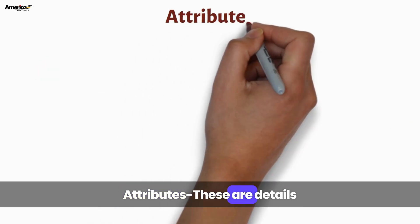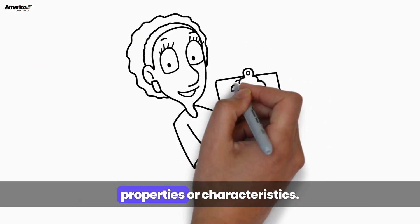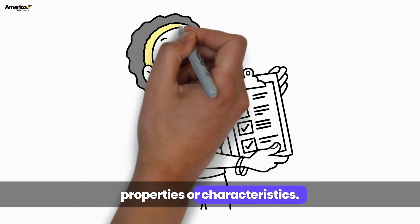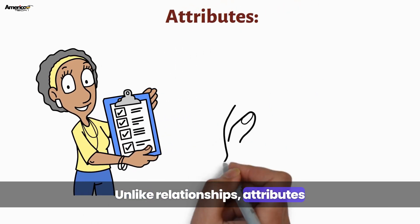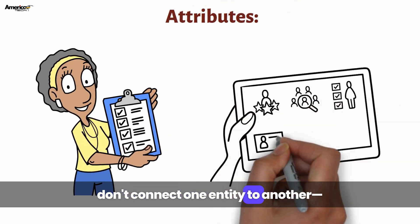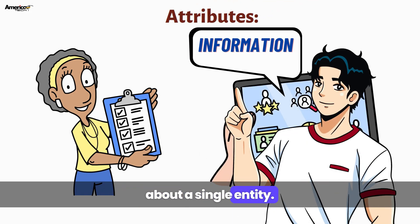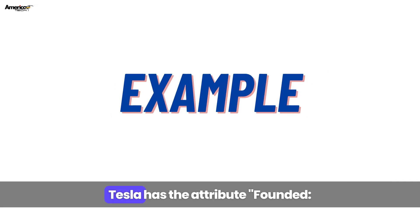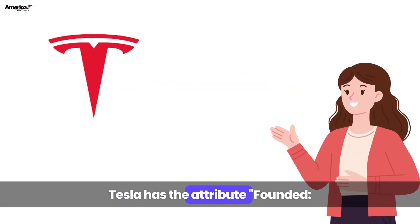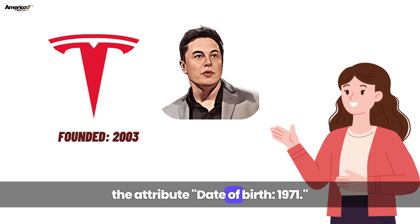Attributes — these are details that describe an entity's properties or characteristics. Unlike relationships, attributes don't connect one entity to another; they give extra information about a single entity. For example: Tesla has the attribute founded 2003, or Elon Musk has the attribute date of birth 1971.